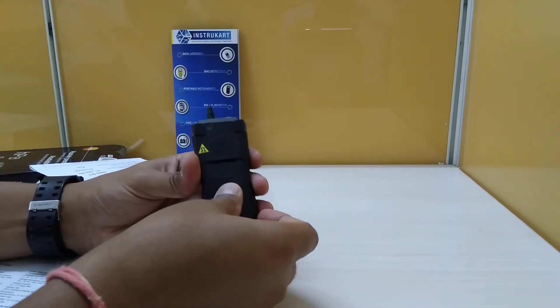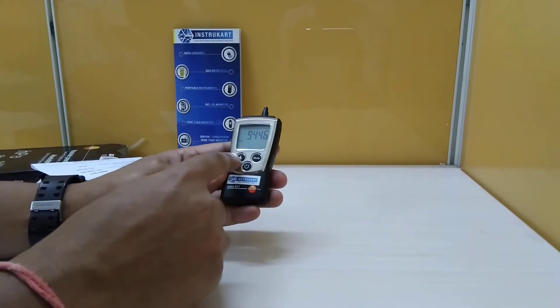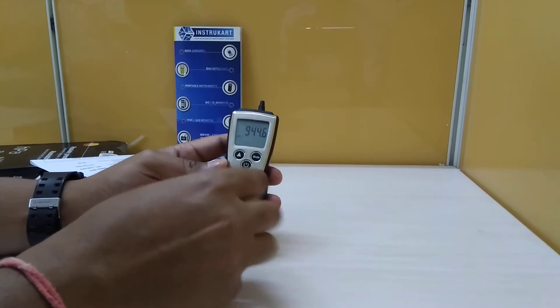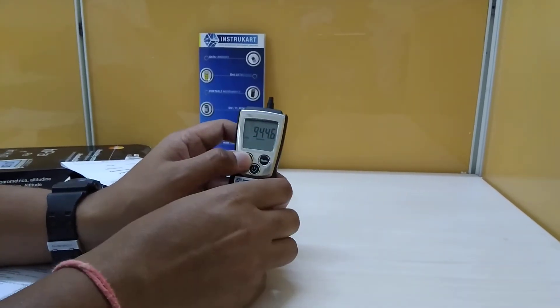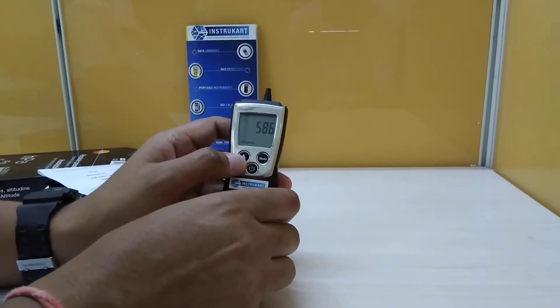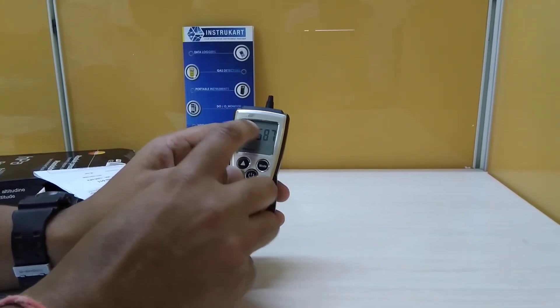You can see three buttons on the instrument to toggle between absolute pressure, barometric pressure, and altitude in meters. You can also use the hold function to hold the last record.